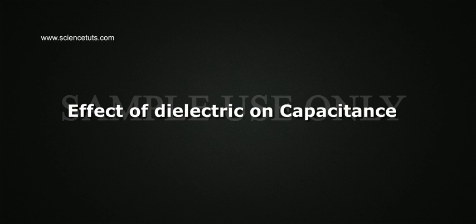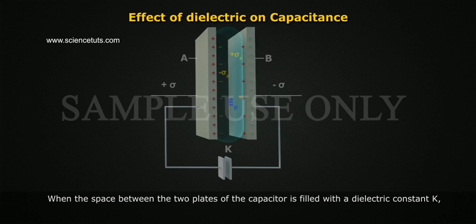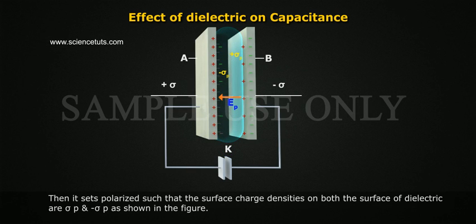Effect of Dielectric on Capacitance. When the space between the two plates of the capacitor is filled with a dielectric constant K, then it sets polarized such that the surface charge densities on both surfaces of the dielectric are sigma p and minus sigma p as shown in the figure.